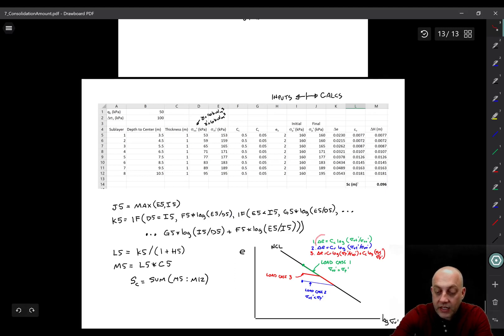Load case one is a normally consolidated load stage. In that case, Delta E is equal to C sub C times log of Sigma V f prime over Sigma V not prime. Basically, this is just a linear equation. We're starting here and then C sub C times the logarithm of Sigma V f prime minus the logarithm of Sigma V not prime is equal to the vertical change between those two points. Of course, the difference in logs is equal to the log of the ratios, so that's why I represent it as a ratio here.